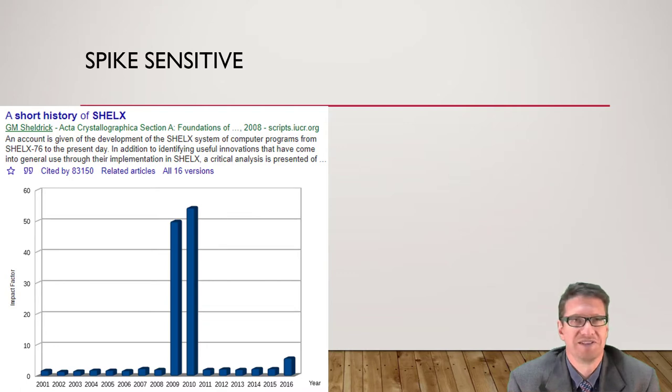So it's spike sensitive. Like I said, metrics sometimes have issues. That was a fairly harmless one, a blip, and an amusing one.